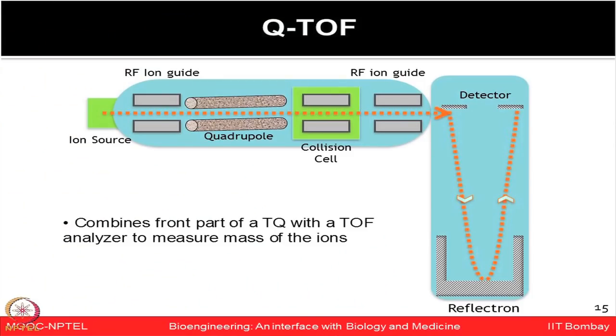The QTOF, or quadrupole time-of-flight, utilizes two different mass analyzers: the first based on quadrupole properties and the second on time-of-flight. Not only are ions resolved in the electric field, but they are also separated in the TOF tube by mass-to-charge ratio based on flight time. A reflectron tube further increases the path length in the TOF tube. By utilizing these combined properties, the intention is to separate and resolve ions much more accurately and in a high-throughput manner to achieve deeper protein coverage.